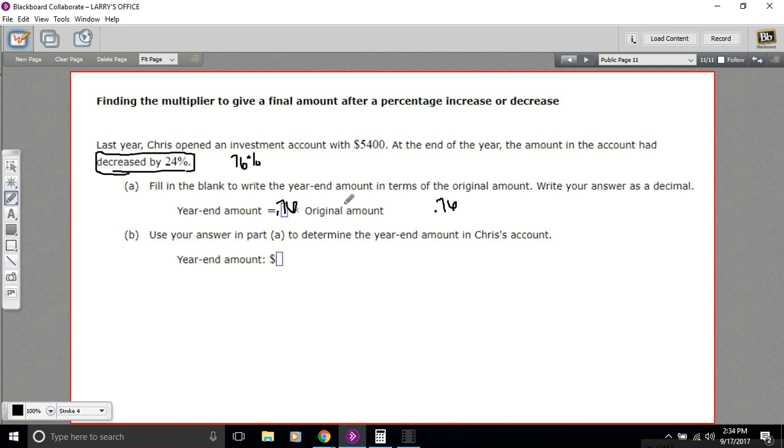That 0.76 is just 76% converted to a decimal by moving the decimal point two places to the left. The second part says use your answer in part (a) to determine the year-end amount in Chris's account.